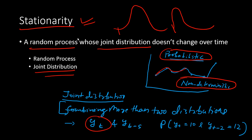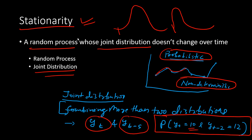For example, let yt be the price of a stock at time t, and yt-s be another distribution in the time series. Let's say yt takes a value of 10 and yt-2 takes a value of 12. The probability of both these time series taking these values jointly is known as the joint distribution.